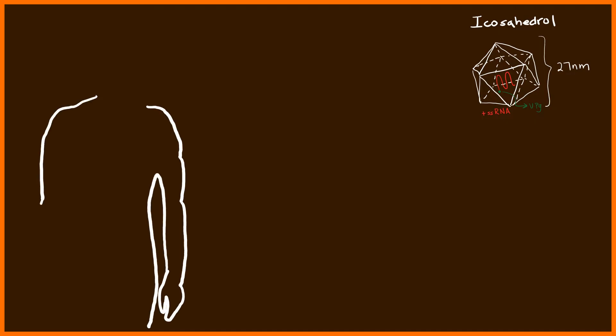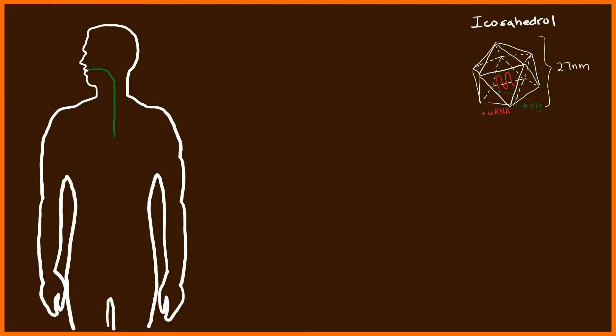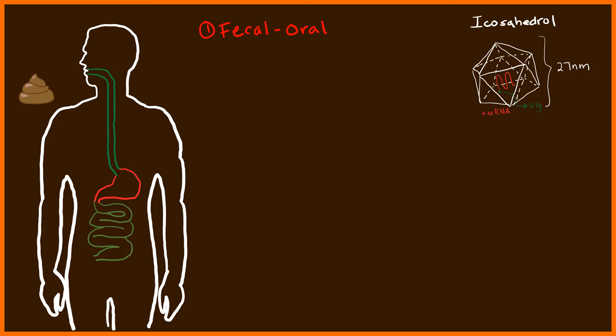Let's begin by looking at the pathophysiology of the Hepatitis A virus to gain a better understanding of the disease and how it impacts the body. The pathophysiology starts with some sort of fecal matter, because Hepatitis A virus is transmitted via what's known as the fecal-oral route. This simply means an individual gets exposed to some fecal matter that has actual Hepatitis A viruses in it.